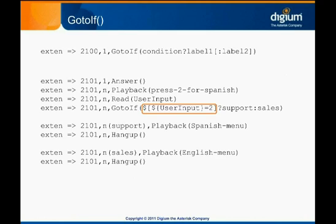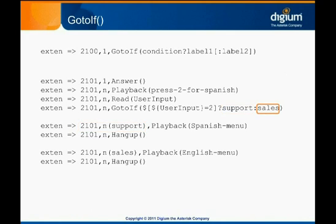If the condition evaluates to true, the channel will be transferred to the address specified by the first label. If the condition evaluates to false, the channel will be transferred to the address specified by the second label. If the label to be followed is not specified, dial plan execution continues normally at the next higher priority in the current context and extension. We'll talk later in much greater detail about dial plan expressions and how to evaluate them.